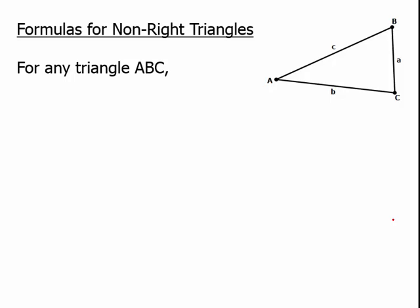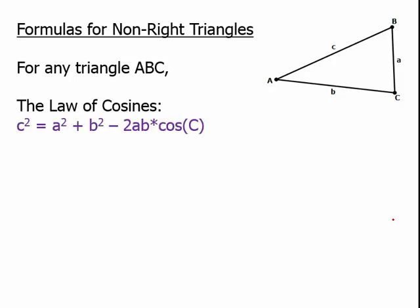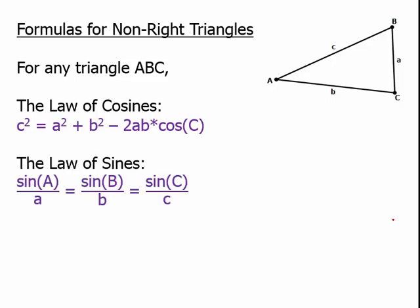For any triangle ABC, there are two important rules for these non-right triangles. One of them is the law of cosines, which is kind of a generalized version of the Pythagorean theorem. And then the law of sines.